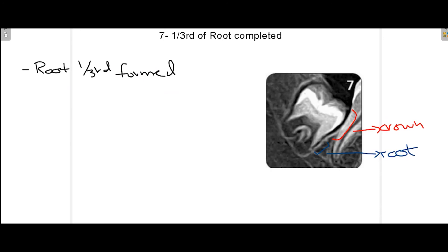At stage 7 the crown is completed, and you can now see with this blue arrow that approximately one third of the root has now been formed. This marks stage 7 where one third of the root has been formed.